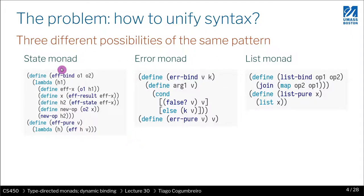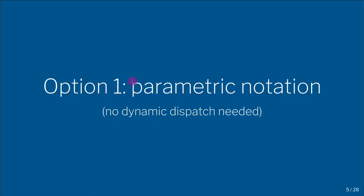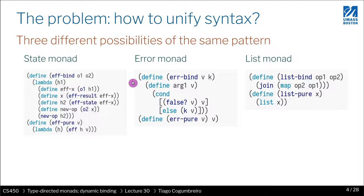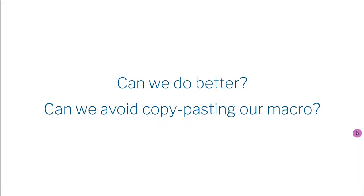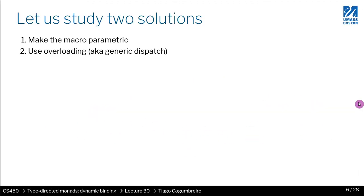In an object-oriented programming language, this is usually represented as an interface — an abstract interface — and you might have different implementations of the same interface. What the interface is doing is generalizing a common abstract pattern. In this case, it would be the monad interface, which has two methods: the first one is bind, and the second one is pure. So how can we offer the same interface for three different implementations?